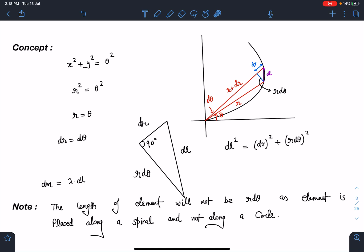Now in this triangle you can see this extra length dr and this length is r·dθ. This angle is 90°, so length of element is dl which I can write as √(dr² + (r·dθ)²).